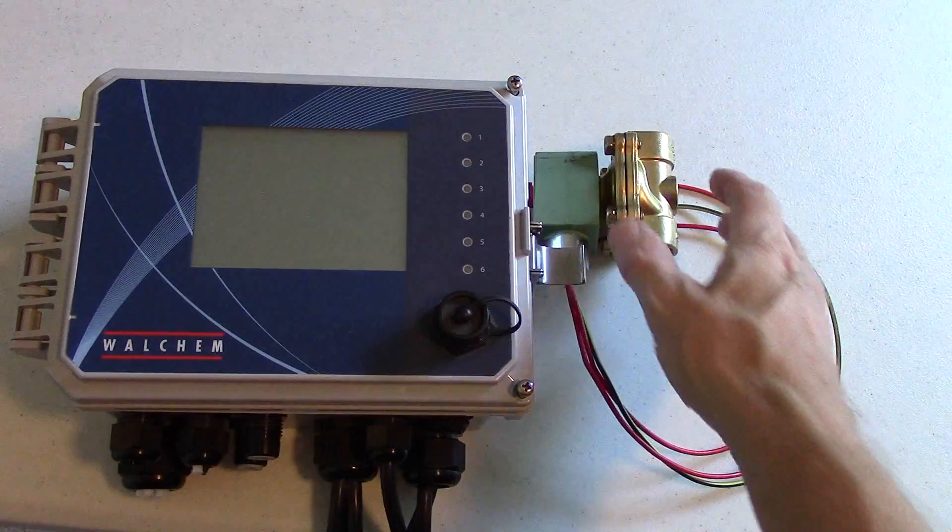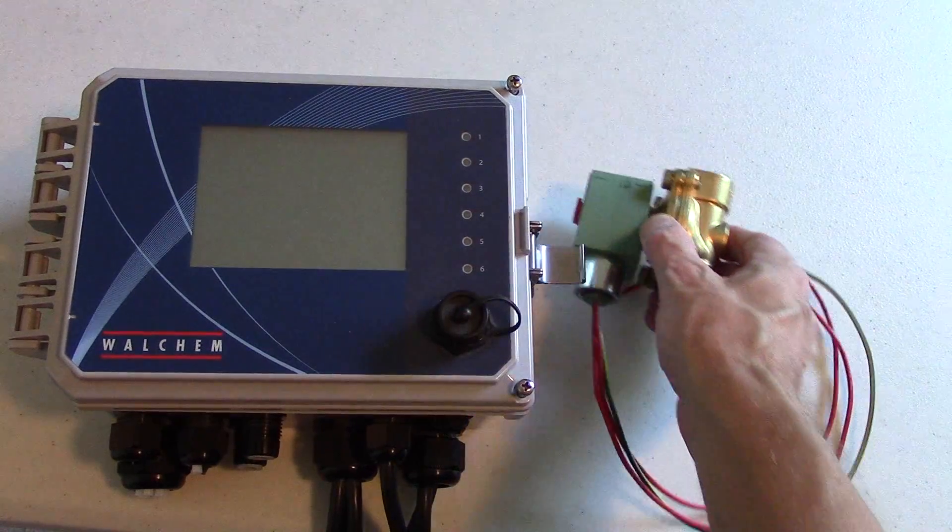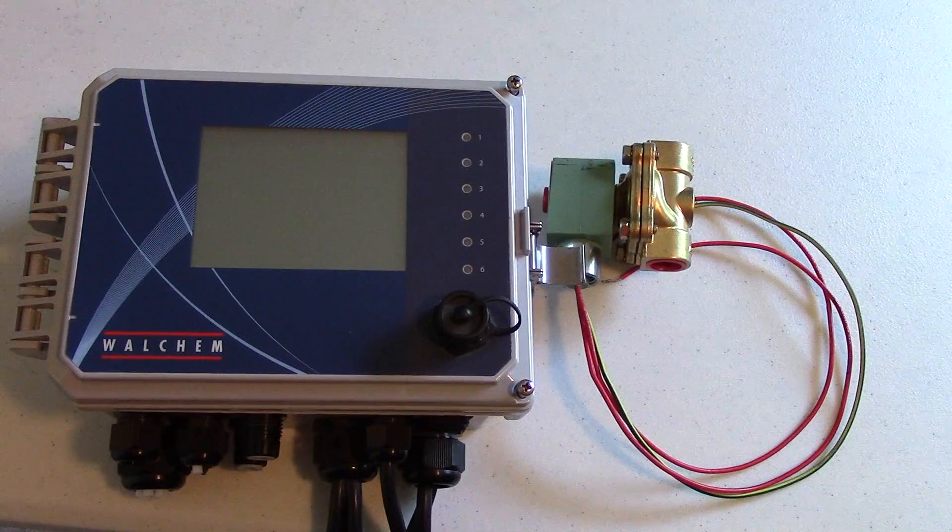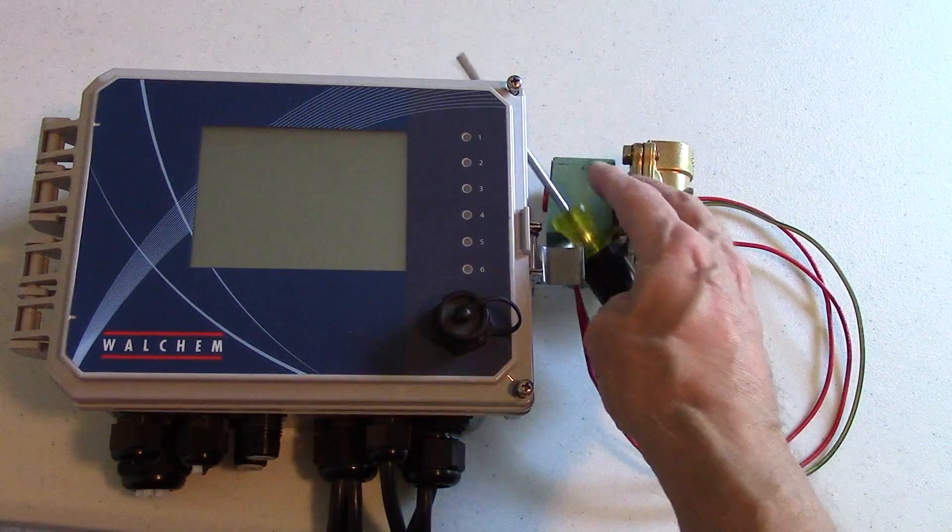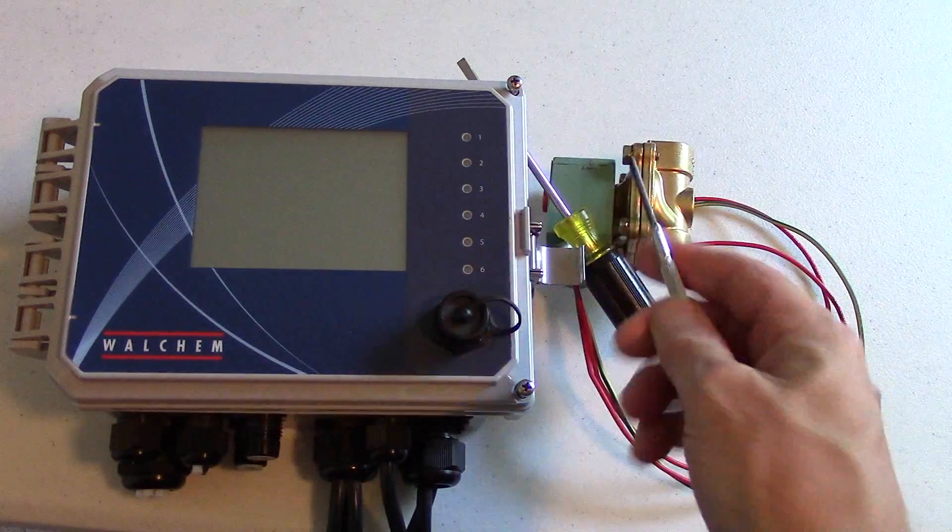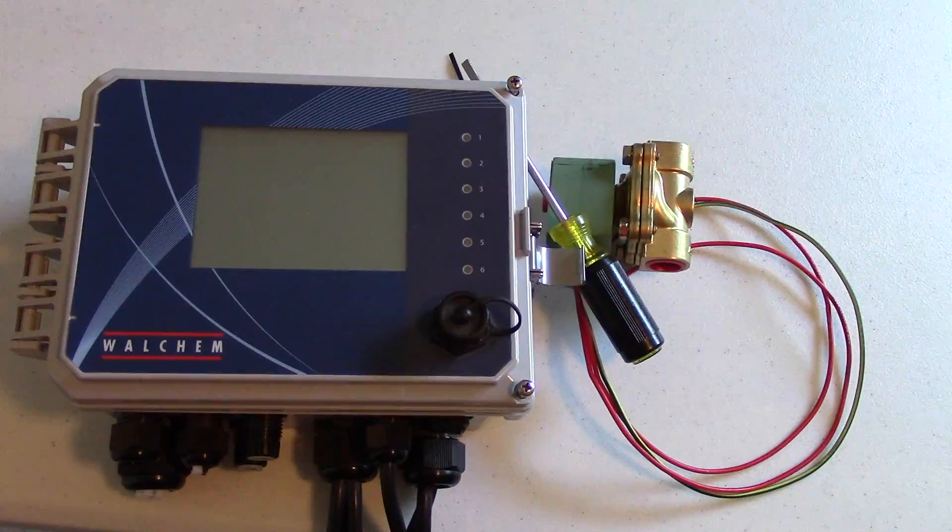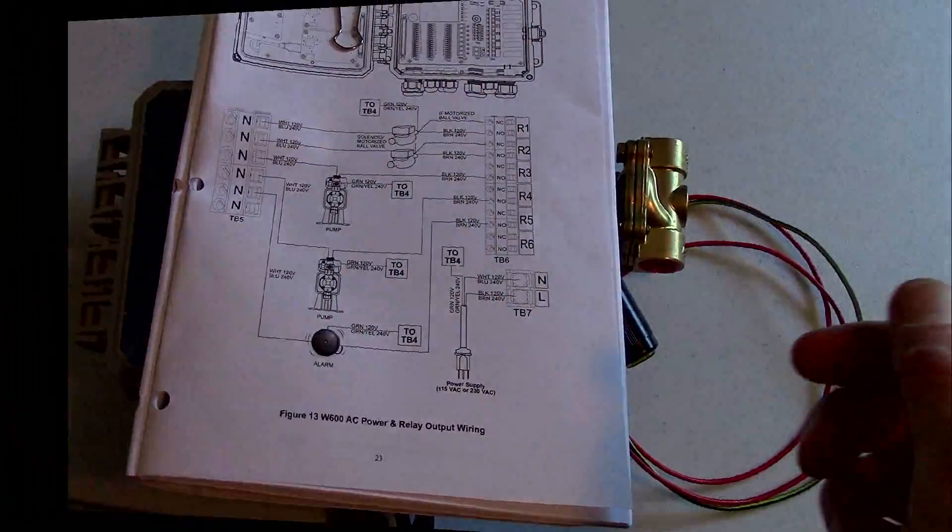In this video, we'll be showing how to wire a solenoid valve to the W600 controller. The tools we're going to use are a flathead screwdriver, a smaller flathead screwdriver, a much smaller one, and the instructions highlighting the wiring diagram for the relays.